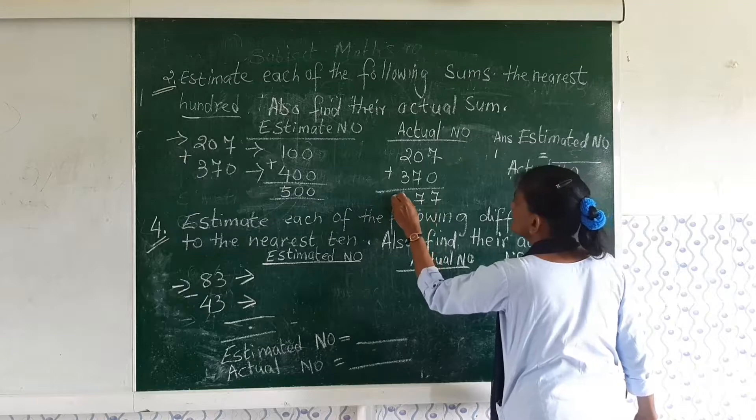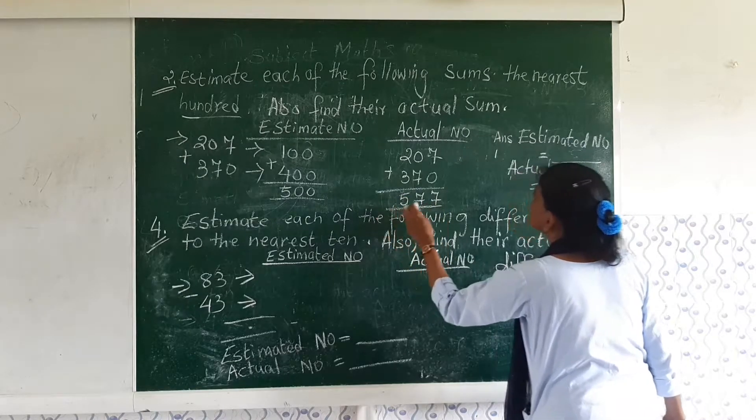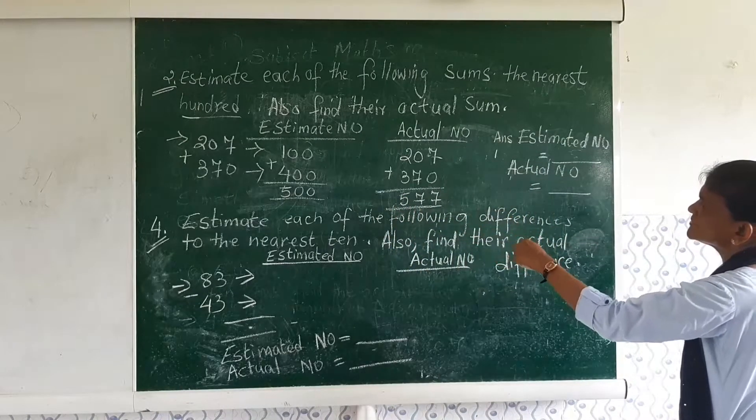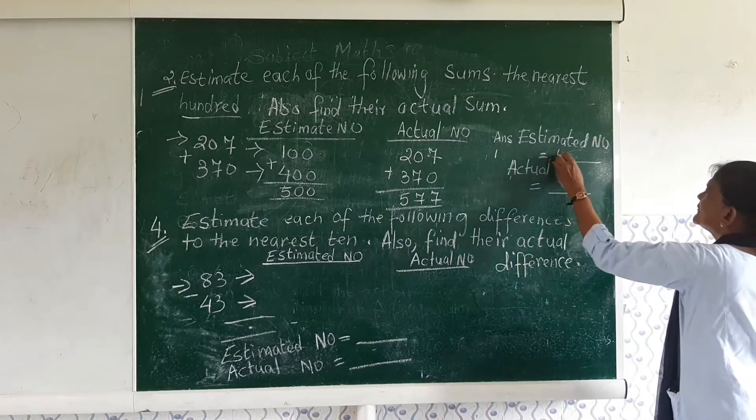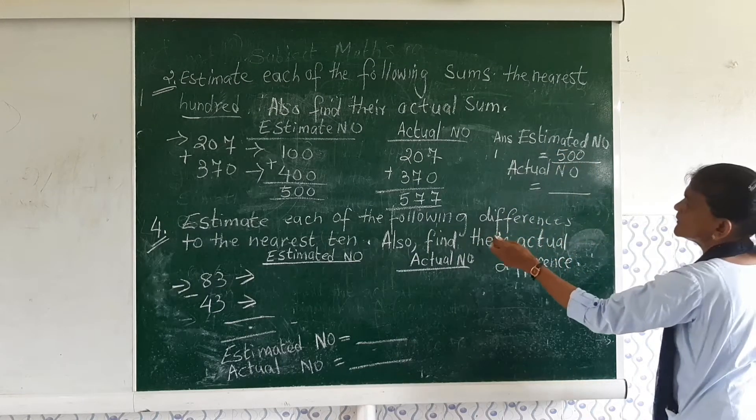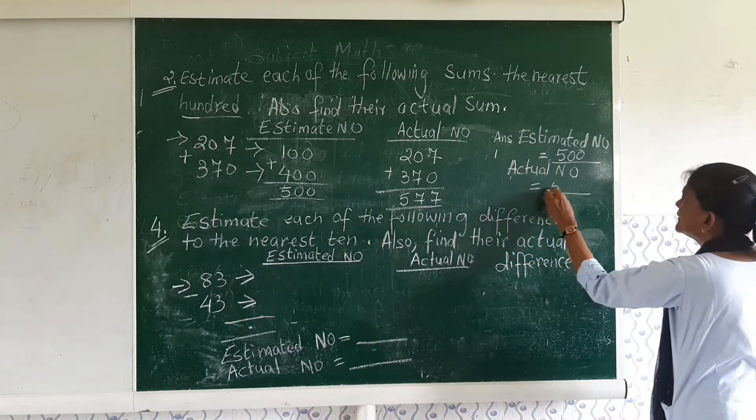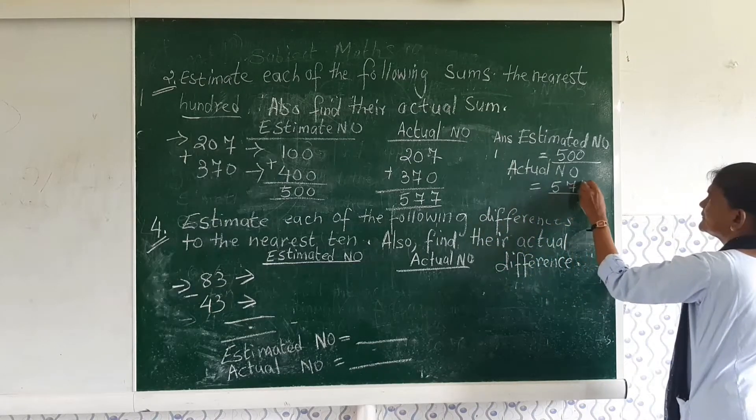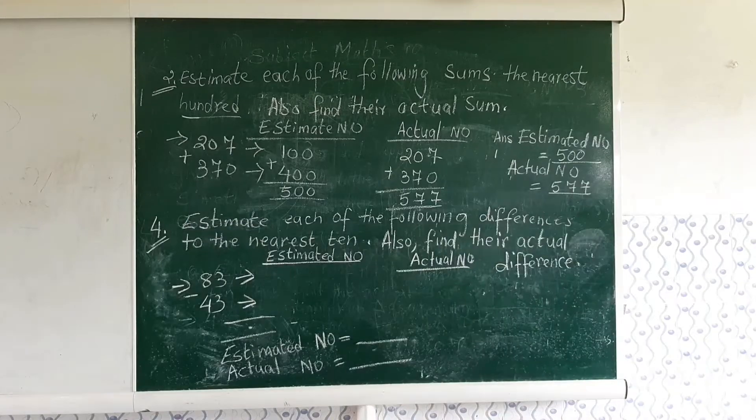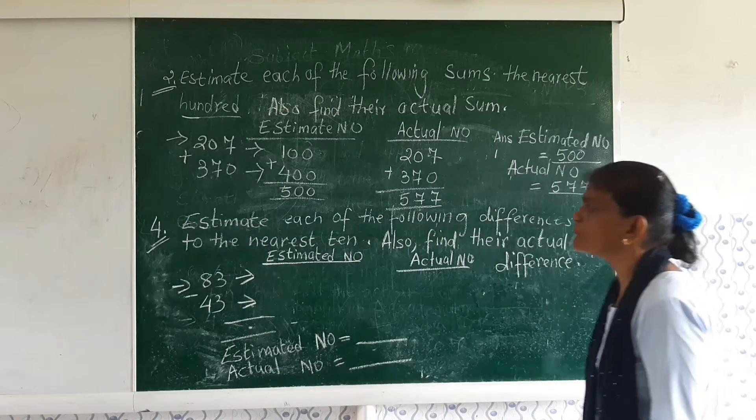And here the actual number is 577. So I hope you have understood. Now, let us go to sum number 4.